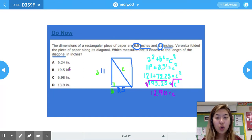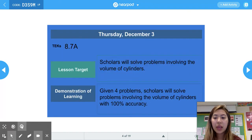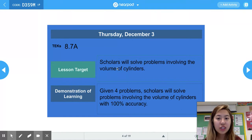And that correlates to answer choice D. Again, today's TEKS is 8.7a. Our lesson target is that scholars will solve problems involving the volume of cylinders. Our DOL is given four problems, scholars will solve problems involving the volume of cylinders with 100% accuracy.